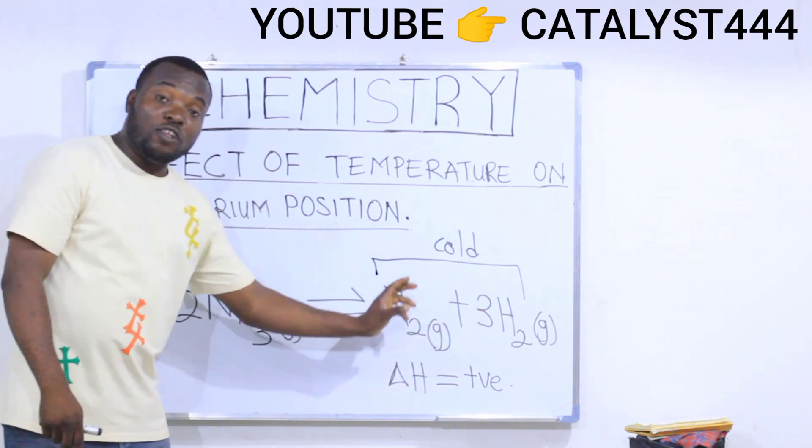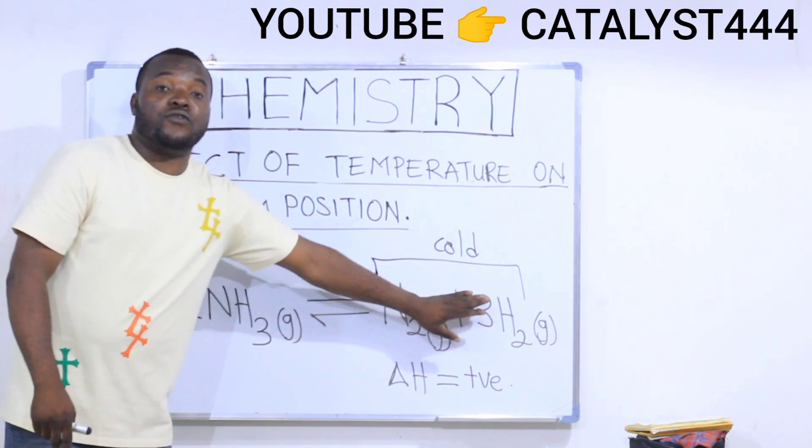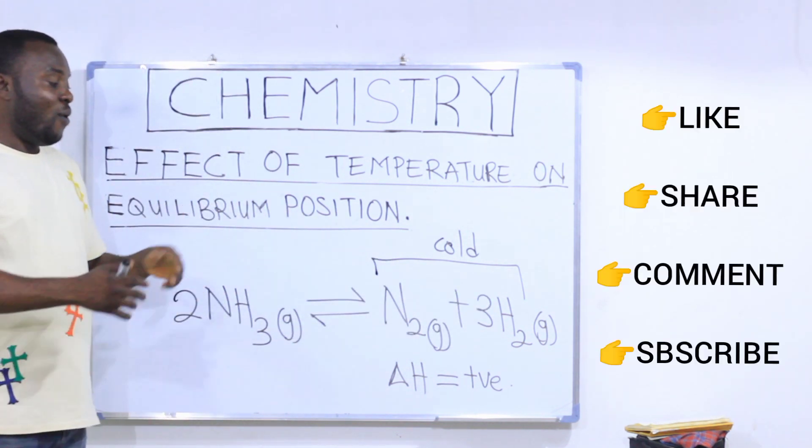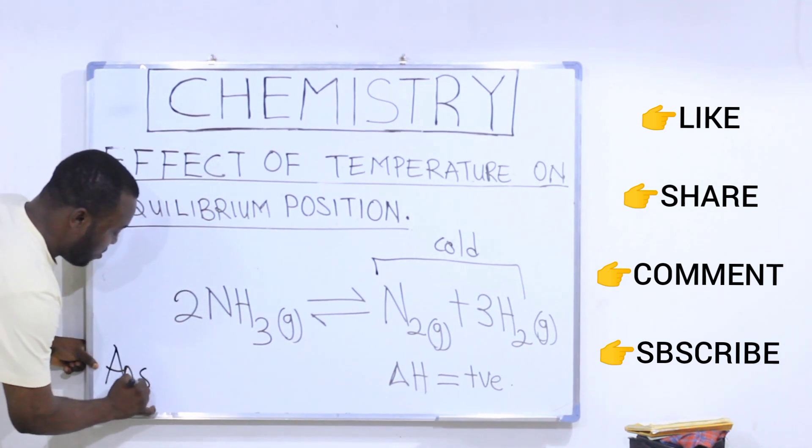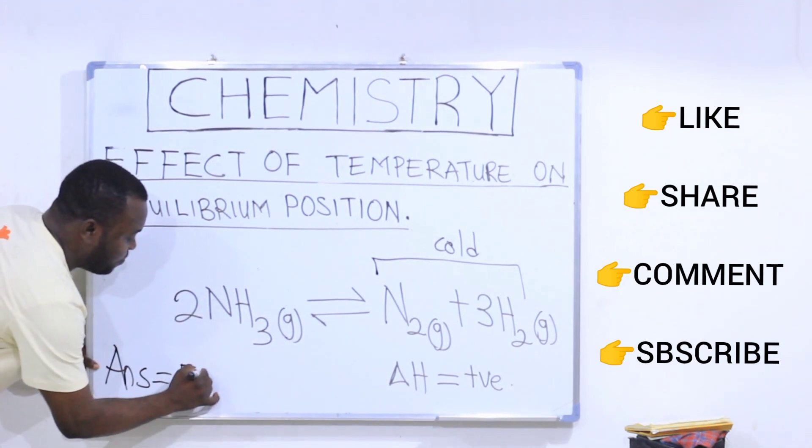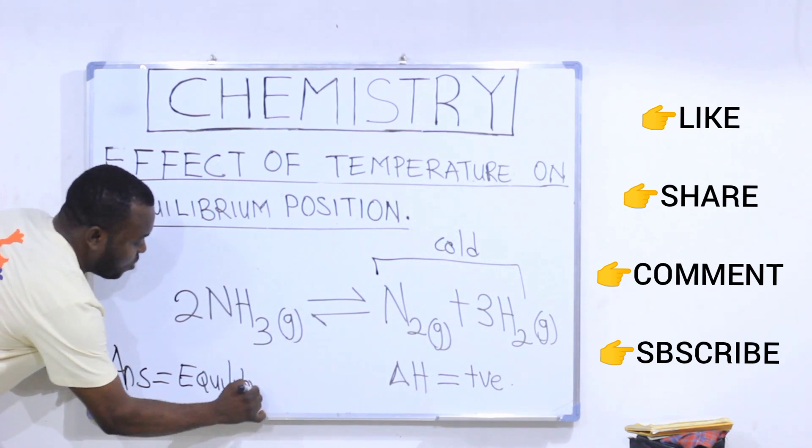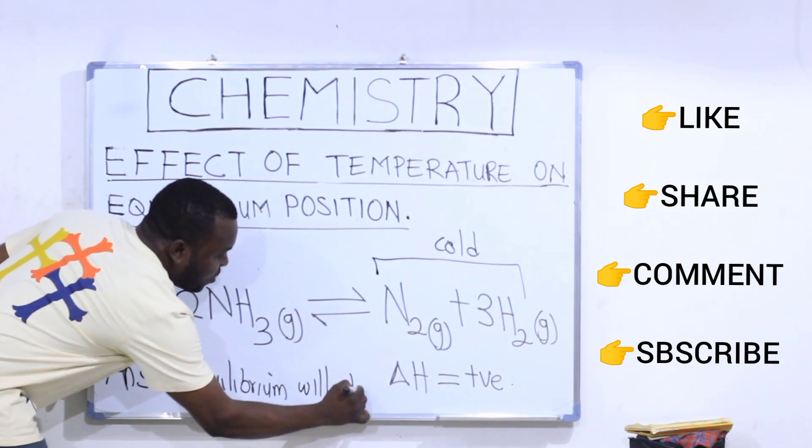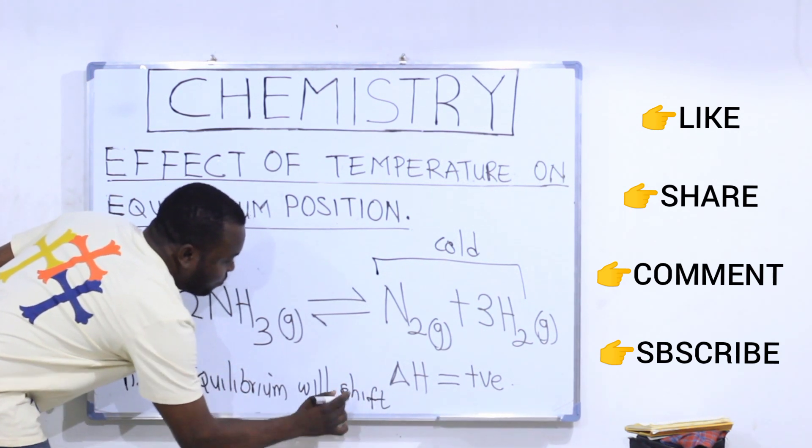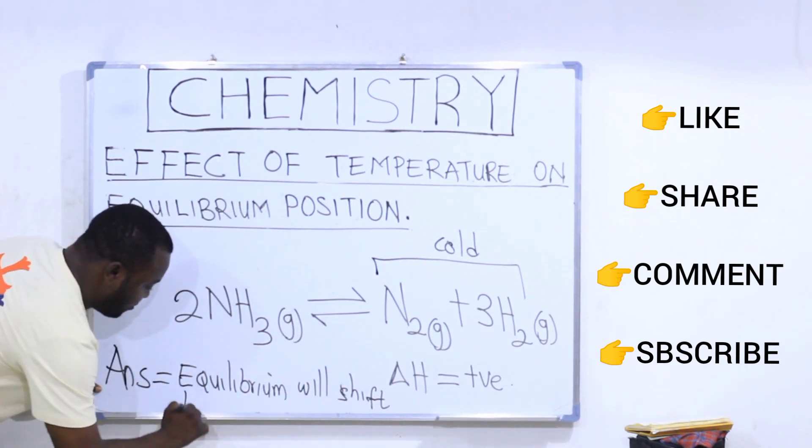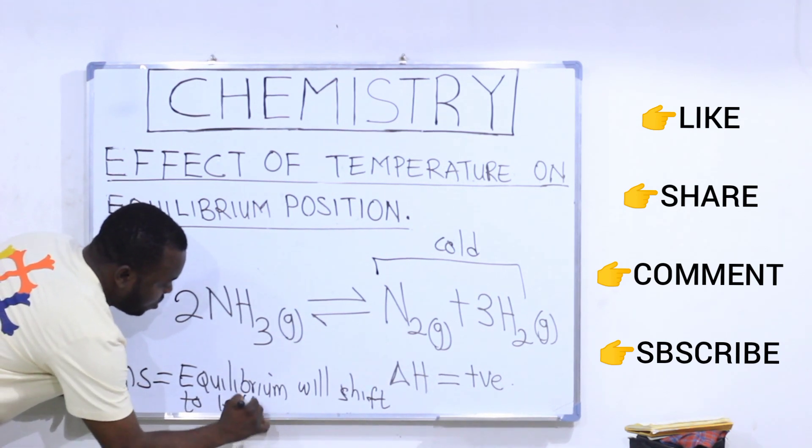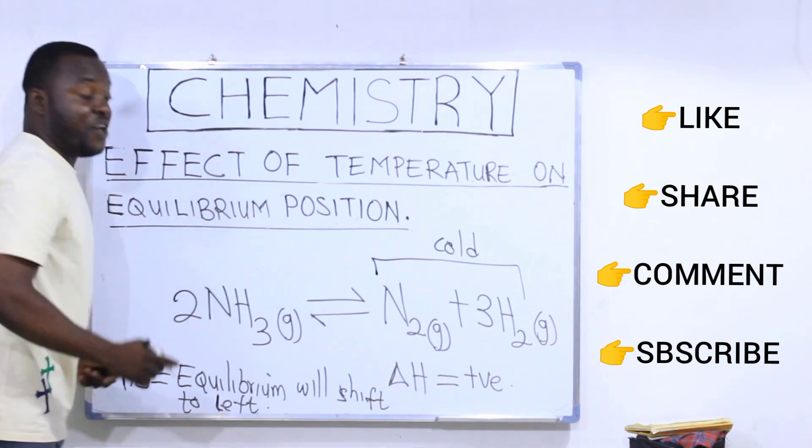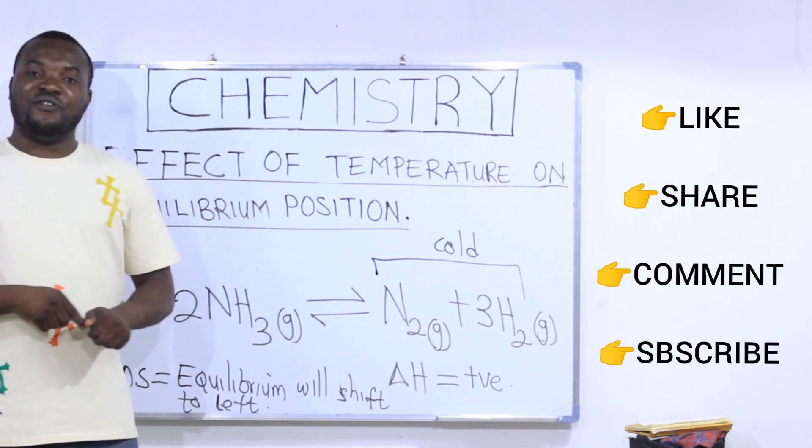So since the temperature is decreased, it simply means the product side will not be favored. Rather, whatsoever that does not favor the product side will favor the reactant side. So our answer simply means that equilibrium will shift to the left, to the left, favoring the backward reaction.